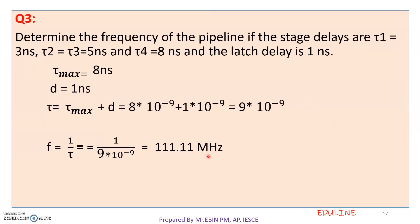The next question gives stage delays tau1, tau2, tau3, tau4 with a latch delay D = 1 ns. We substitute into T = tau_max + D = tau_max + 1 ns, giving 9 × 10⁻⁹ seconds. The frequency is f = 1 / (9 × 10⁻⁹), approximately 111 MHz. These are the types of questions already asked in the university exam, and we are discussing them.